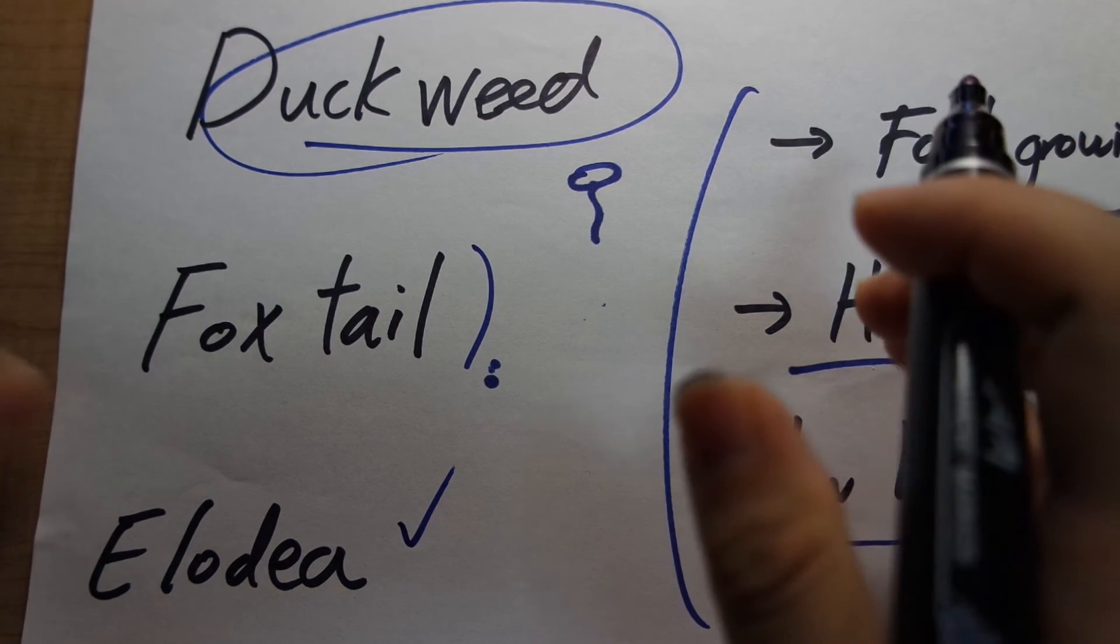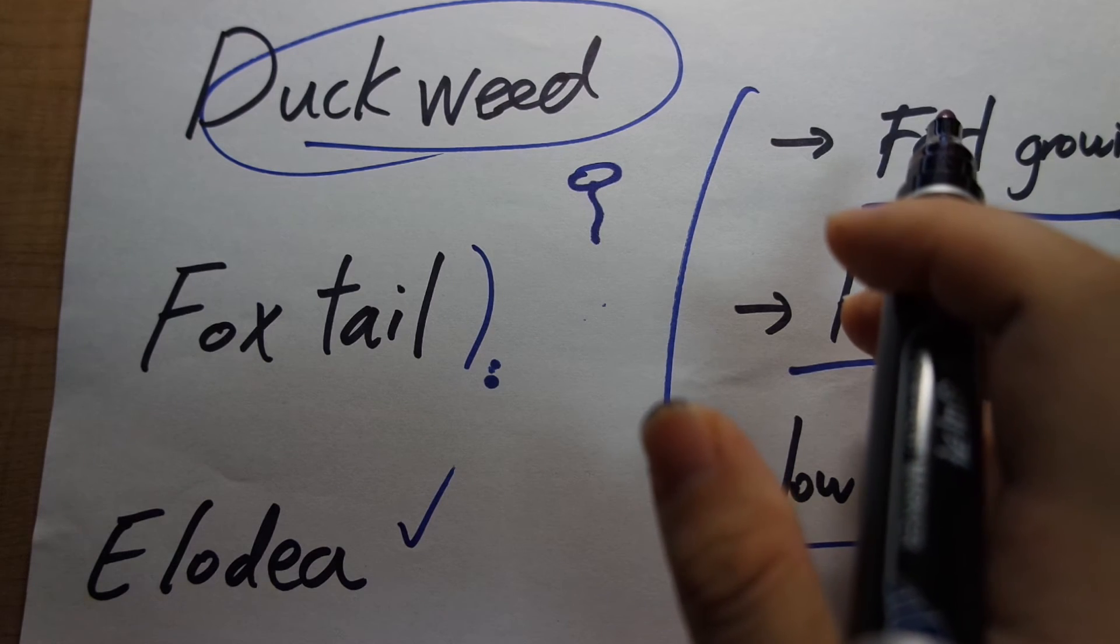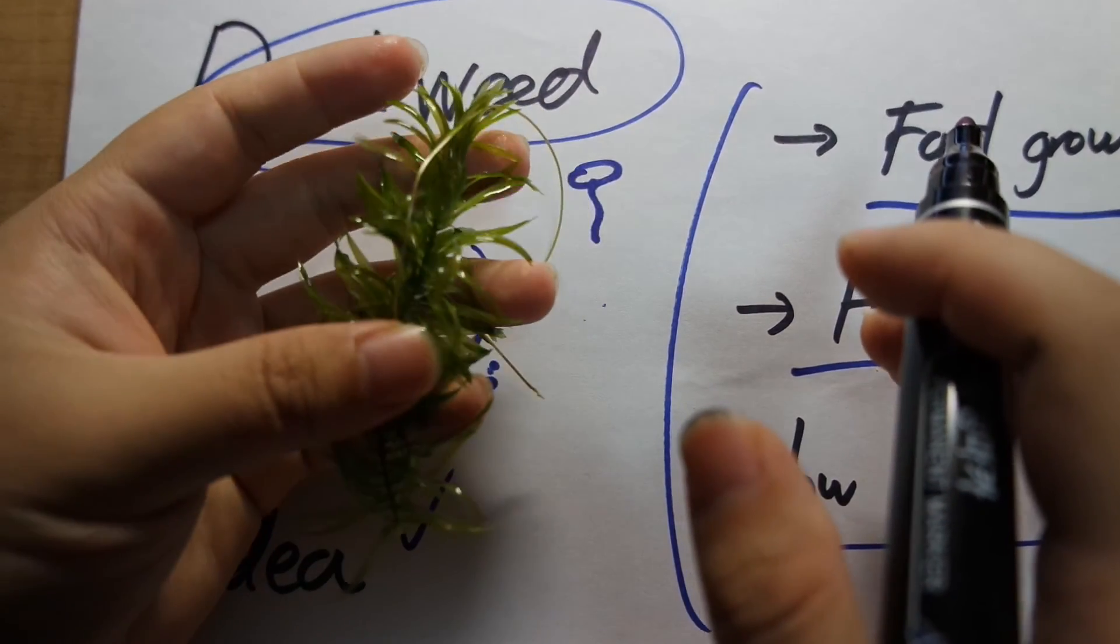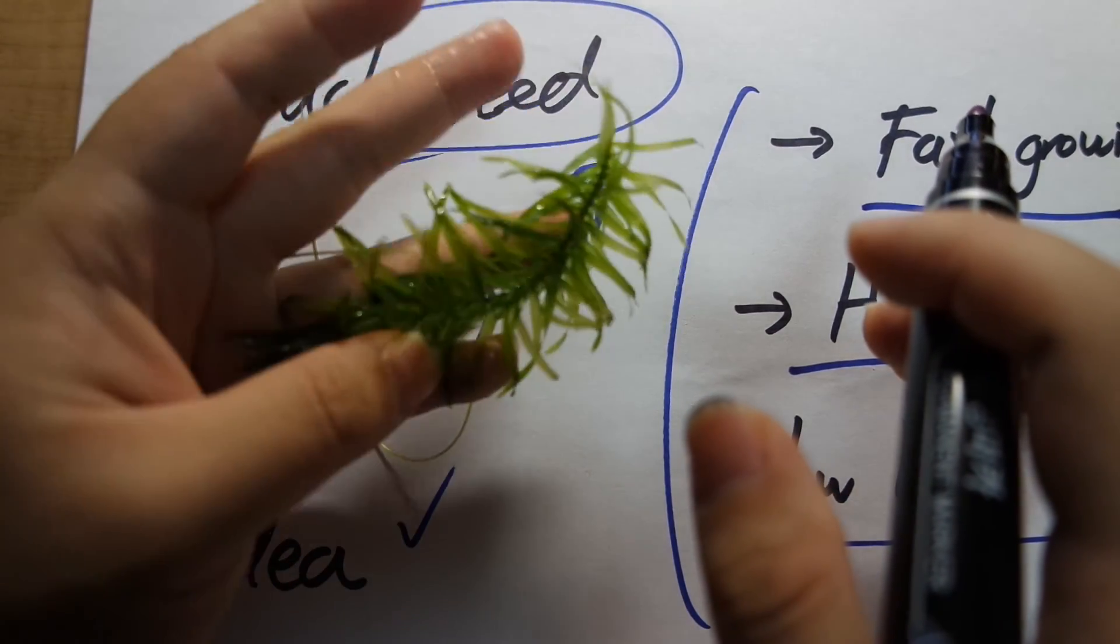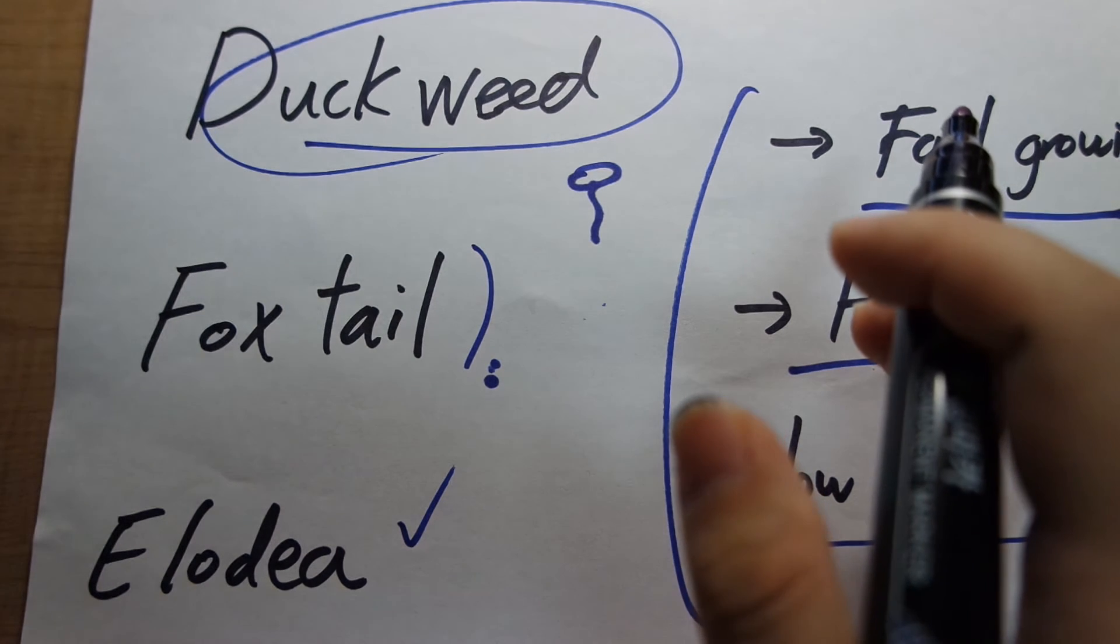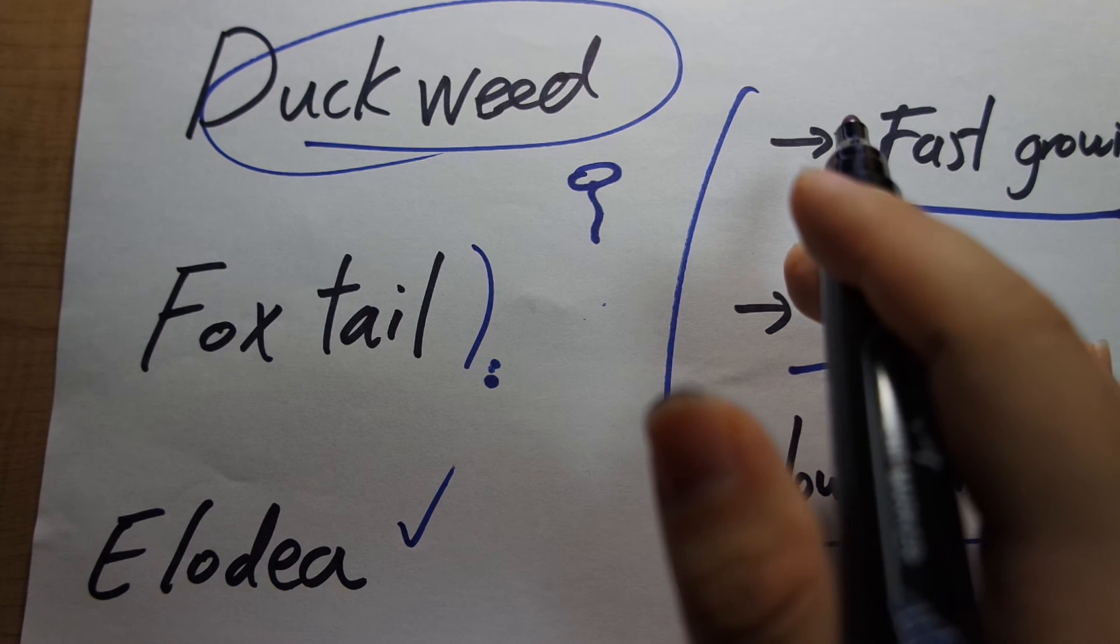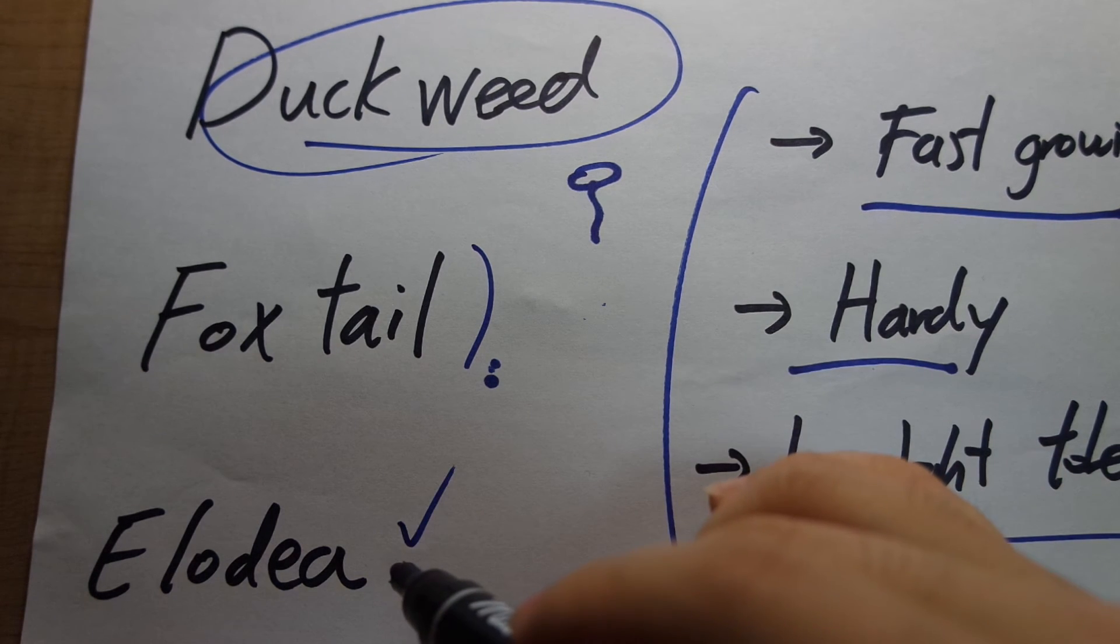The third one is Elodea, also known as Anacharis. And these are the most complex of the three and probably the slowest grower, but they still grow pretty fast. They look like this. And these guys can grow both inside a substrate, rooted, and they can also grow free-floating, just like foxtail. But I do find that they grow better when they're rooted in a substrate.